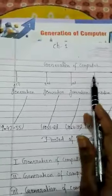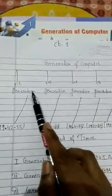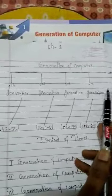So there is a generation. Generation means a step-by-step development. In the generation of computers, there are 5 generations of computers.